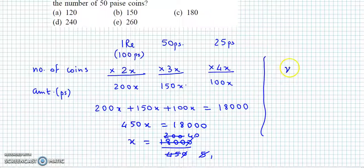yahaan se hume x ki value mil gai 40. Aur hume poocha gaya number of 50 paise coins. Ab 50